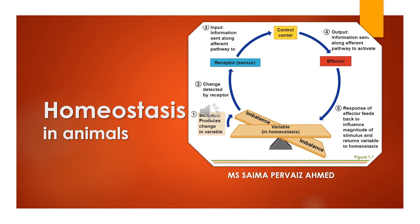Any organism can maintain the internal environment by maintaining body temperature, body pH, body salt requirements, and all other processes occurring inside the body. For the maintenance of homeostasis, organisms use different kinds of procedures. In the nervous system, there is a receptor, control center, and effectors. Receptors collect information, the control center takes action with the help of effectors, and through this passage any organism can maintain homeostasis in their body.